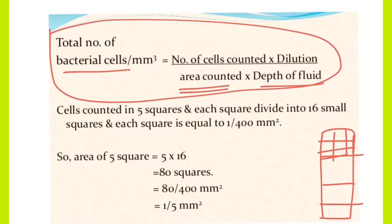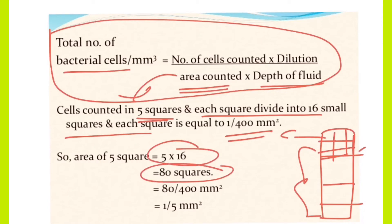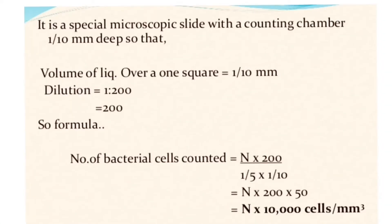Now we are using the culture to dilute and the depth, dilution, the information of the total area. Each square divides into small squares, one by four hundred millimeter squares. The area is divided into 16 parts.